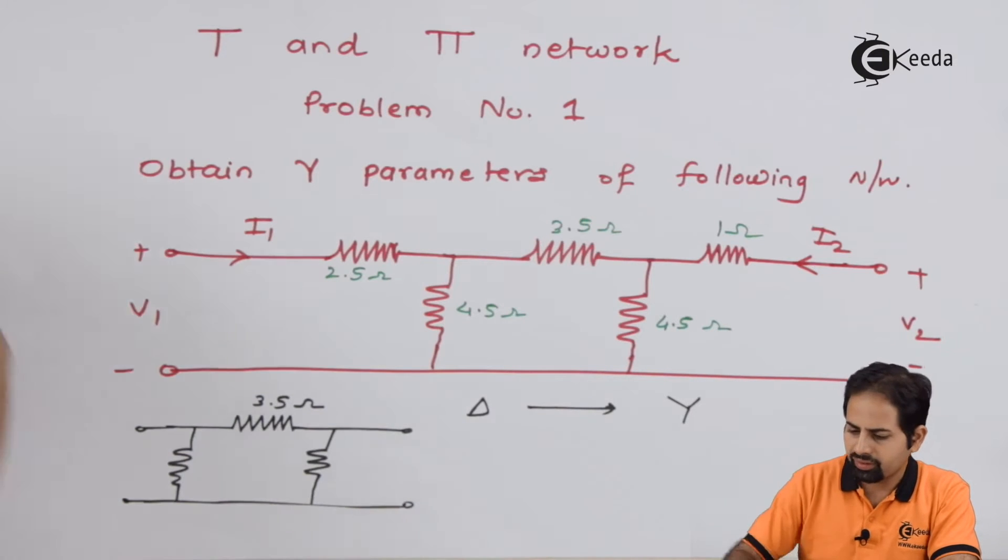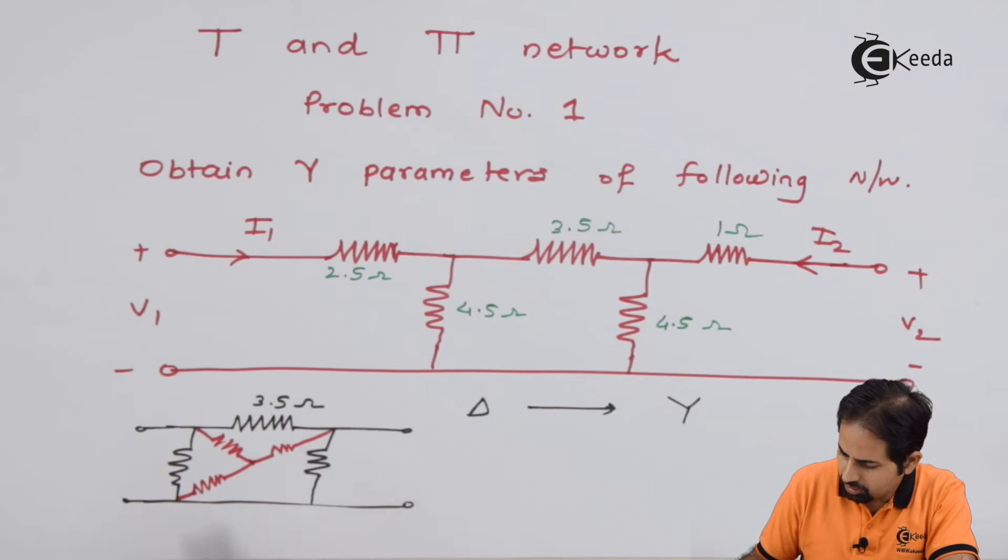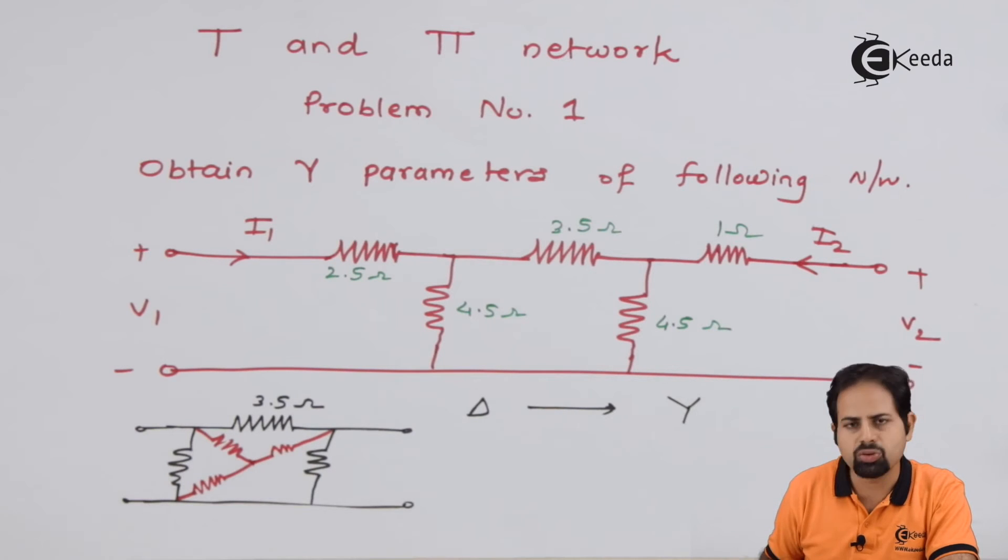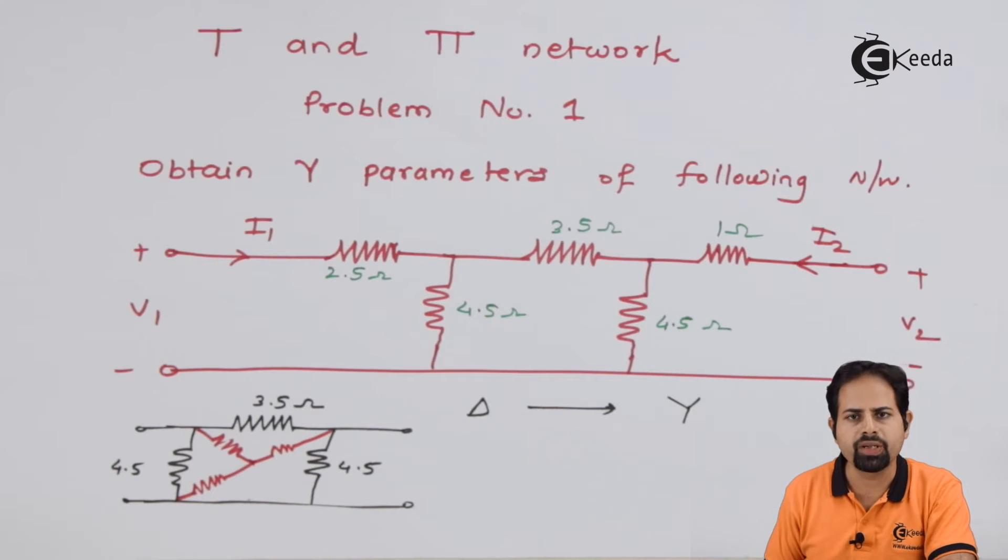So for that, we put a dot in between and we attach three resistances. This one is between these two, this is between these two and this is between these two resistances. This could have been drawn here also. Let's write the values and let's give some names or we may do this on another page.